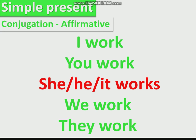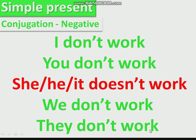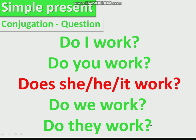Simple present conjugation — affirmative: I work, you work, she/he/it works, we work, they work. Negative: I don't work, you don't work, she/he/it doesn't work, we don't work, they don't work. Questions: Do I work? Do you work? Does she/he/it work? Do we work? Do they work? Easy.